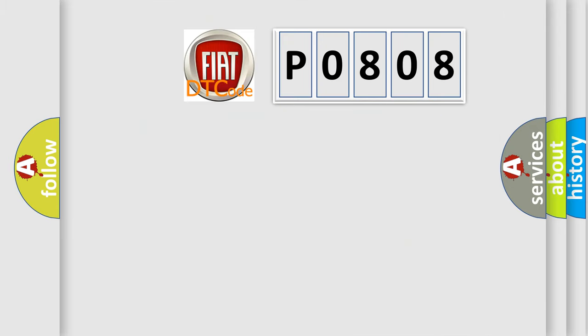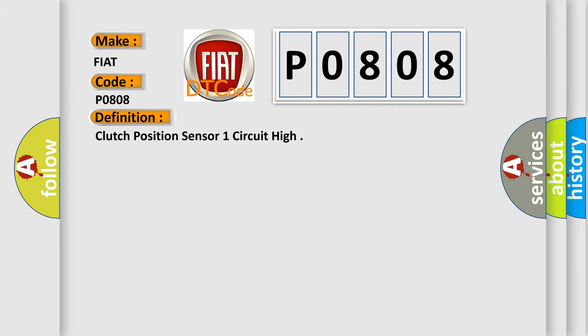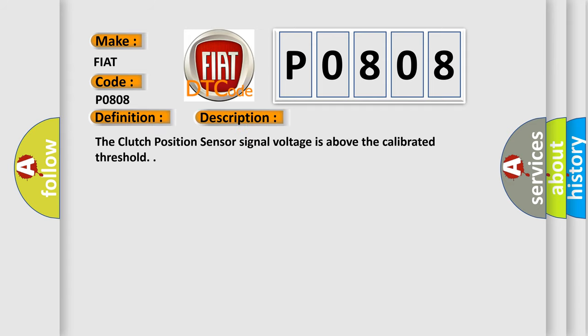So, what does the diagnostic trouble code P0808 interpret specifically for FIAT car manufacturers? The basic definition is: Clutch position sensor one circuit high. This is a short description: The clutch position sensor signal voltage is above the calibrated threshold.